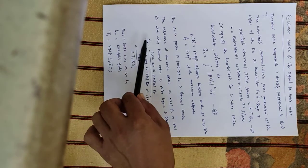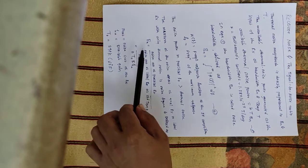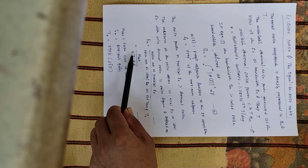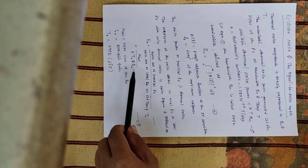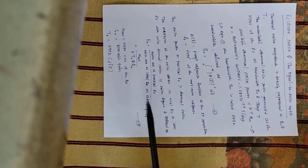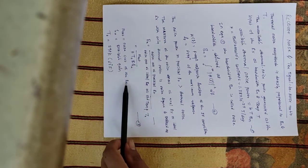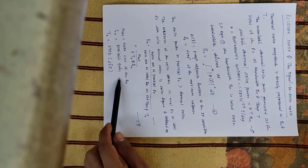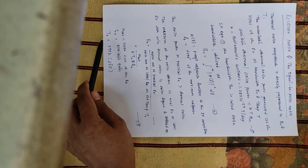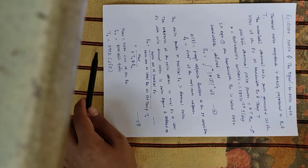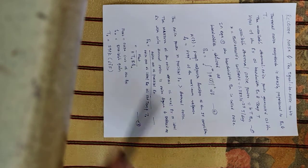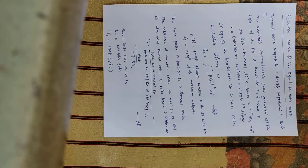We can mathematically write the expression for the noise figure as Fn = Nout / (k·T0·B·Ga), where Nout is the noise output of the practical receiver, Ga is the available gain, and T0 is the standard temperature having the value 290 Kelvin.